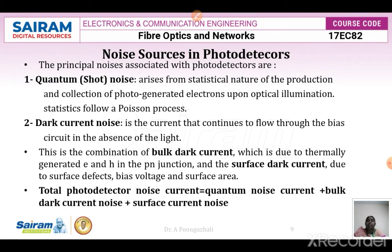The noise sources in photodetectors: the main noise sources are quantum noise and dark current noise. Quantum noise, also called shot noise, arises from the statistical nature of the production and collection of photogenerated electrons upon optical illumination — when light strikes and ionizes a bond, releasing an electron. This statistics follows a Poisson process. Dark current noise is the current that continues to flow through the bias circuit in the absence of light — as the name implies, it is the current flowing without any illumination.